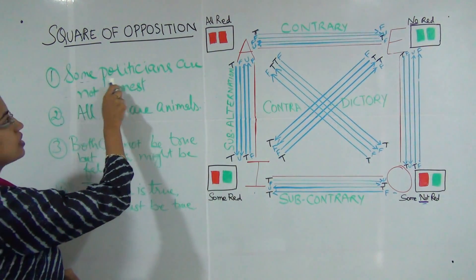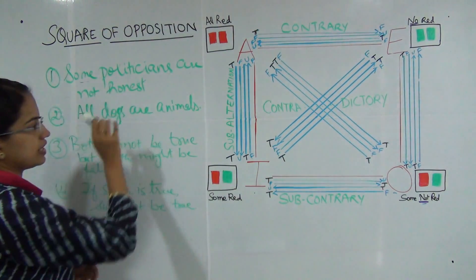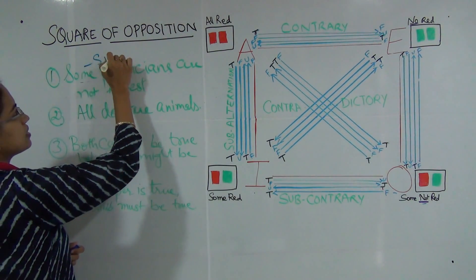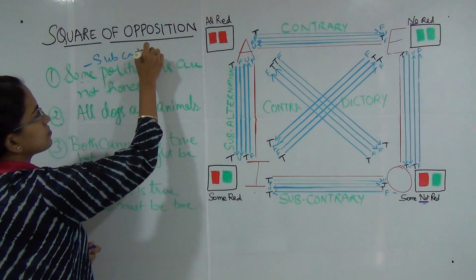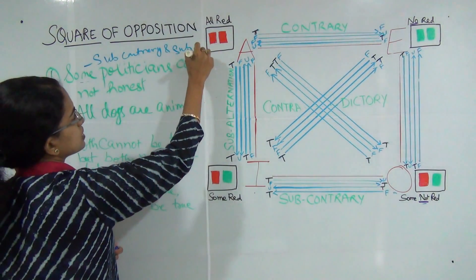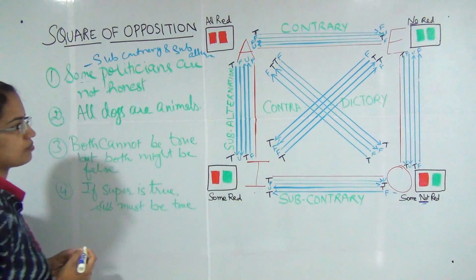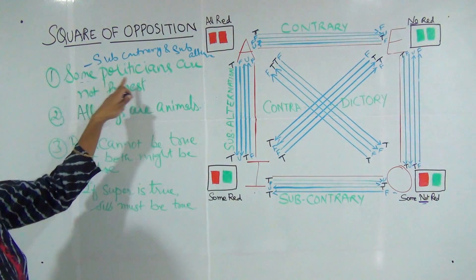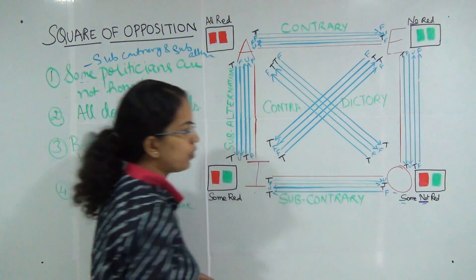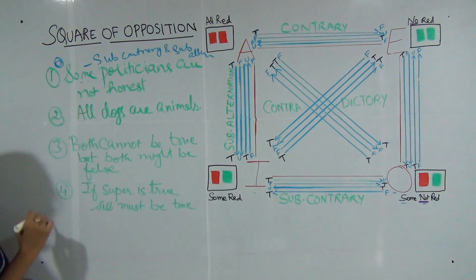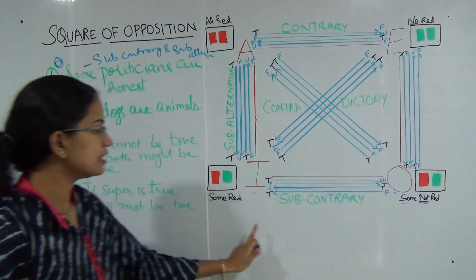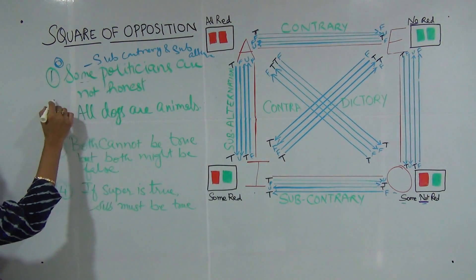I have a statement: 'Some politicians are honest.' This statement is of type O. Since subcontrary is a relation between I and O, I need to find out the statement for I here.